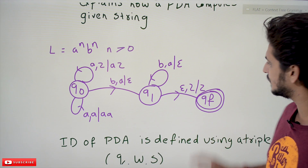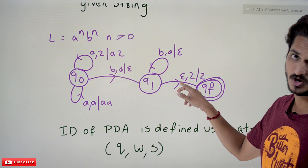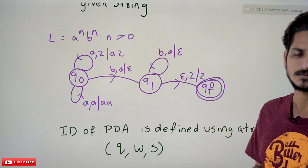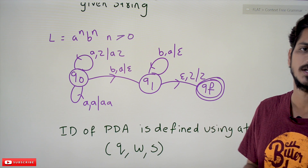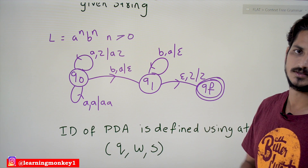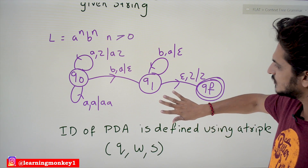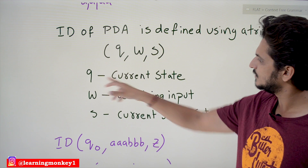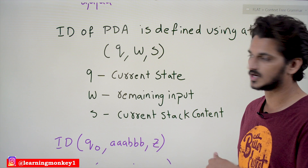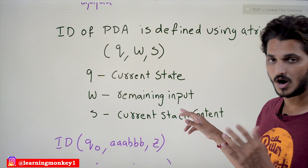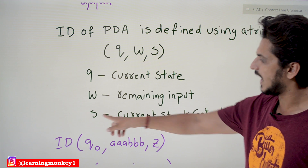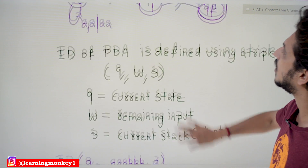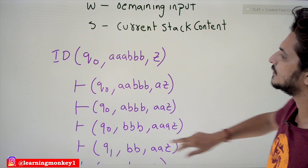One more operation: on state q1, if the input symbol is epsilon and the stack top is Z, the stack remains the same — the same symbol Z is mentioned, meaning no operation. We move to qf (final state), shown with two circles. Instantaneous description of a pushdown automata is defined using a triple: (q, w, s) — where q is the current state, w is the remaining input, and s is the current stack content.